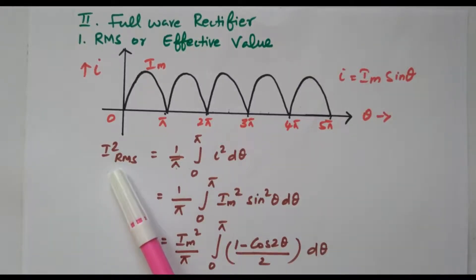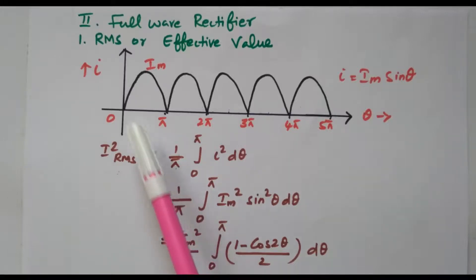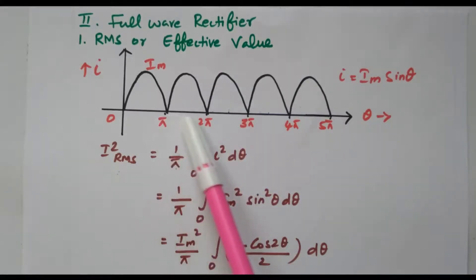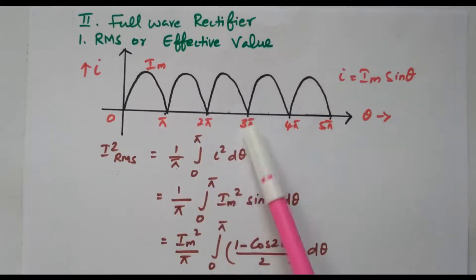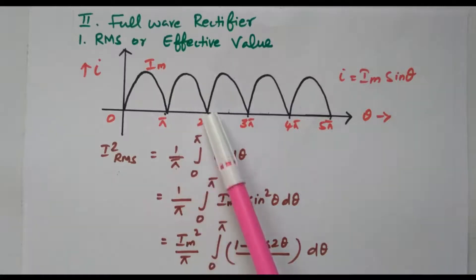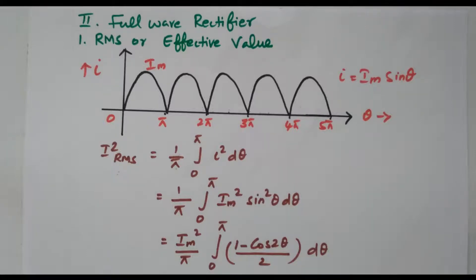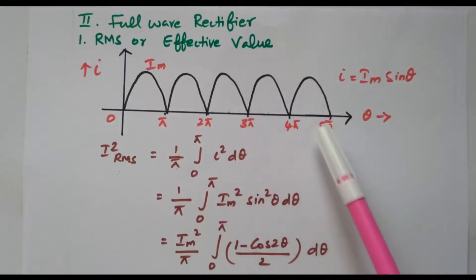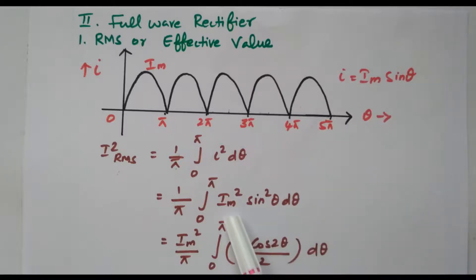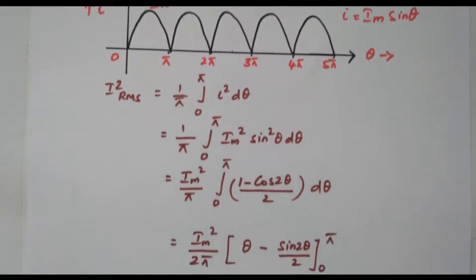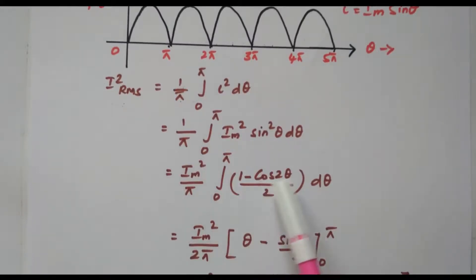For every half cycle we get positive current from 0 to 2π. The formula is I = Im·sinθ. IRMS² = (1/π) ∫₀π I² dθ. Here we use π (not 2π) because every half cycle is symmetrical — 0 to π is symmetrical with π to 2π — so we only need to consider one half cycle. In the half wave rectifier we took a full cycle because voltage was absent from π to 2π. Substituting: (1/π) ∫₀π Im²·sin²θ dθ.